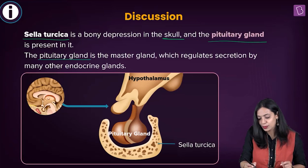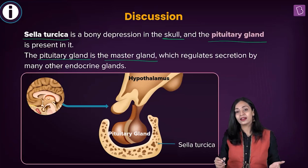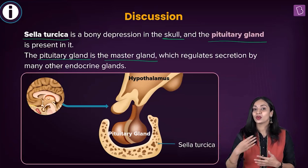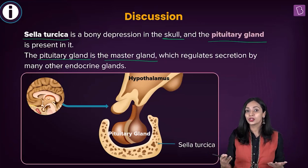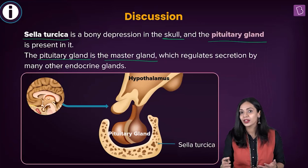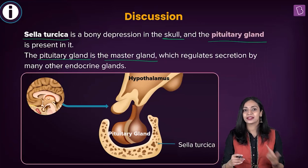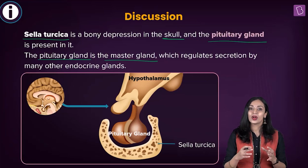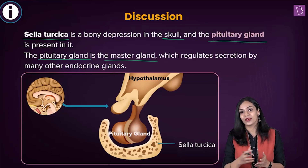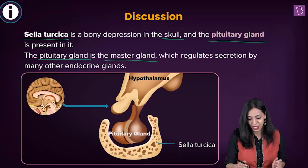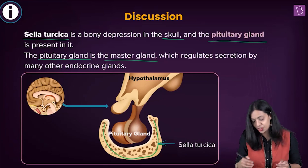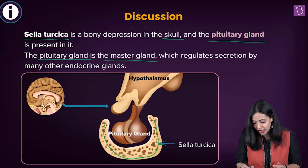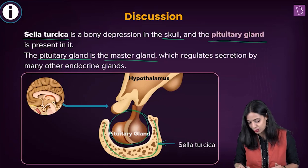The pituitary gland is known as the master gland. It is involved in secretion of various hormones that control the activity of other endocrine glands like the ovaries, testes, thyroid gland, and adrenal cortex. Since it controls the activities of various other glands, it's known as the master gland. The pituitary gland sits within the bony cavity in the skull.